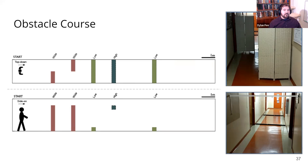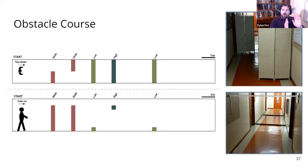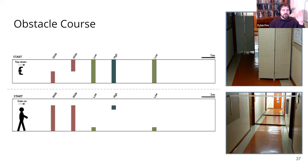We have a diagram of the course here. On the top we see the top-down version: the wide obstacles block half the hallway while the low and high obstacles extend across the full width. On the bottom we see it from the side: the wide obstacles are about two meters tall, the low obstacles are along the bottom of the hallway, and the high obstacles are near the top right at eye level.